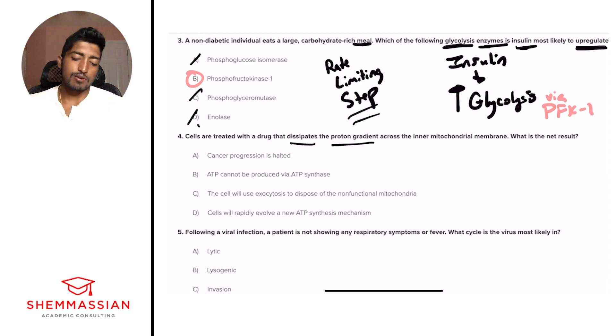So we want to think, what is this inner mitochondrial membrane and what does it do? So when we're thinking, mitochondria, powerhouse of the cell, what is it doing? It's related to protons and ATP synthase. As we're creating ATP, it's due to this proton gradient. So I'm right away thinking, proton gradient, ATP. So if we're dissipating the proton gradient, then we're going to have less ATP available. So I'm going to eliminate A and C almost immediately because they don't have anything to do with proton gradients or ATP. And so we're down to B and D. ATP cannot be produced via ATP synthase. Or D, cells will rapidly evolve a new ATP synthesis mechanism.